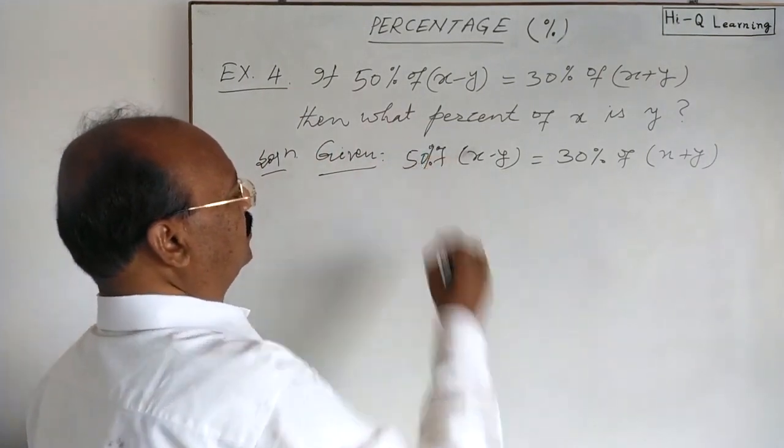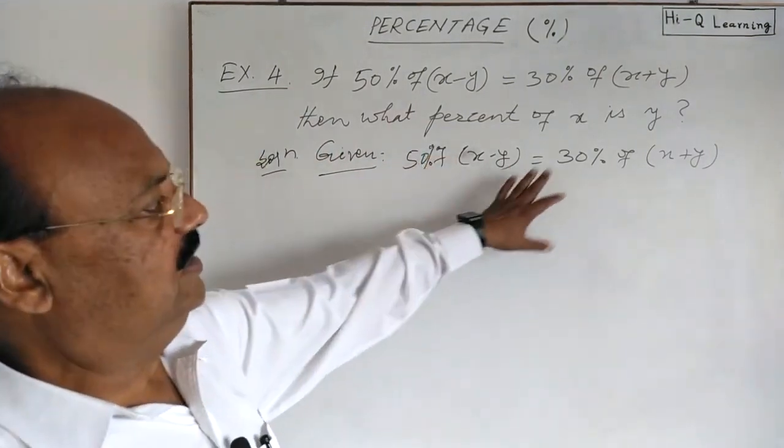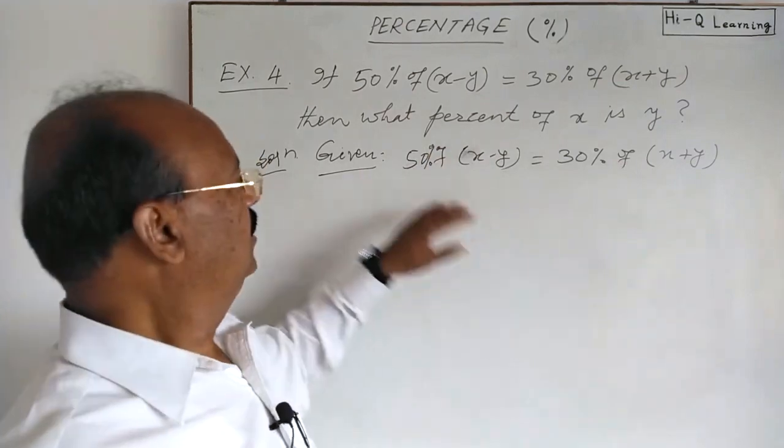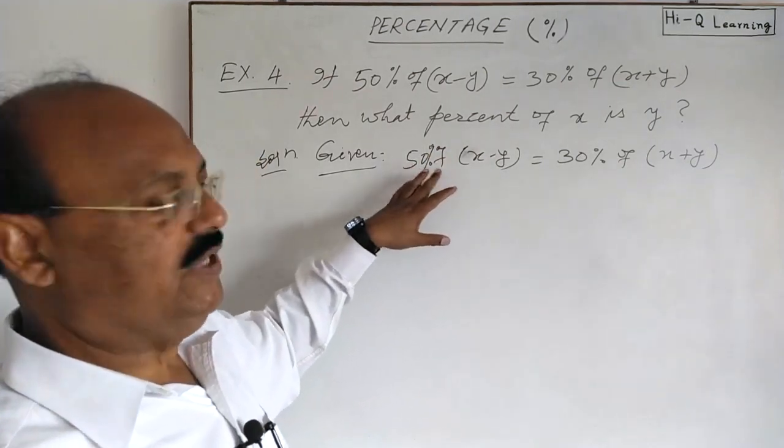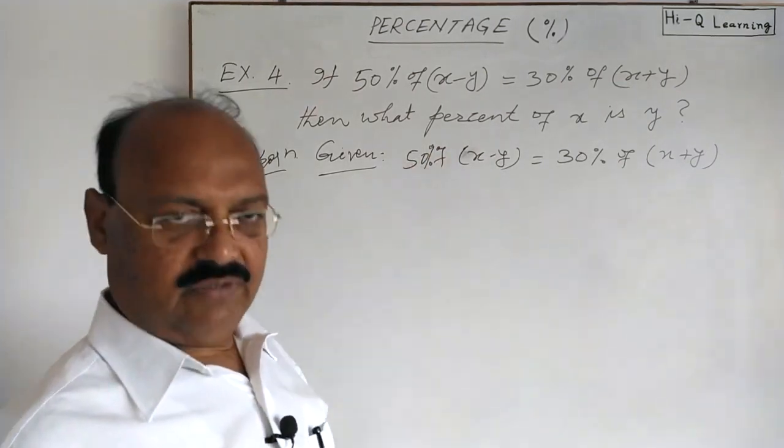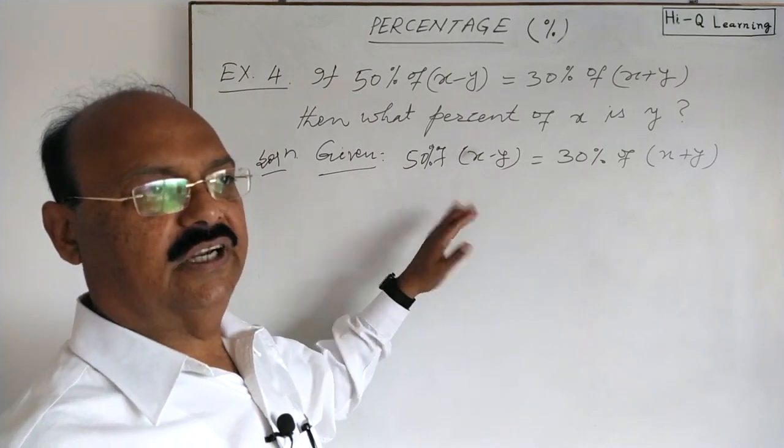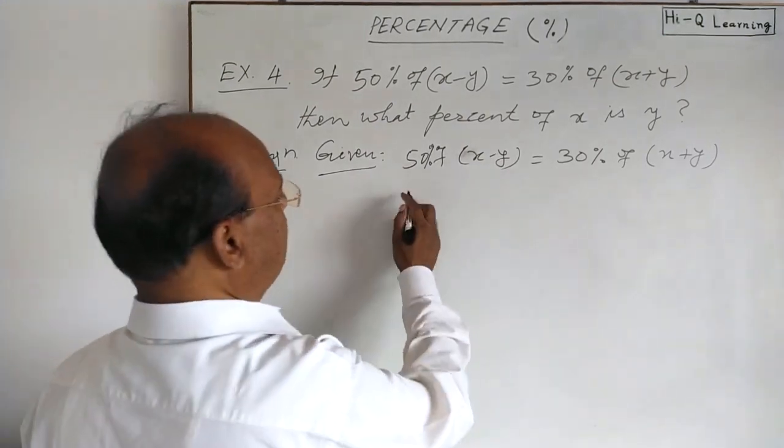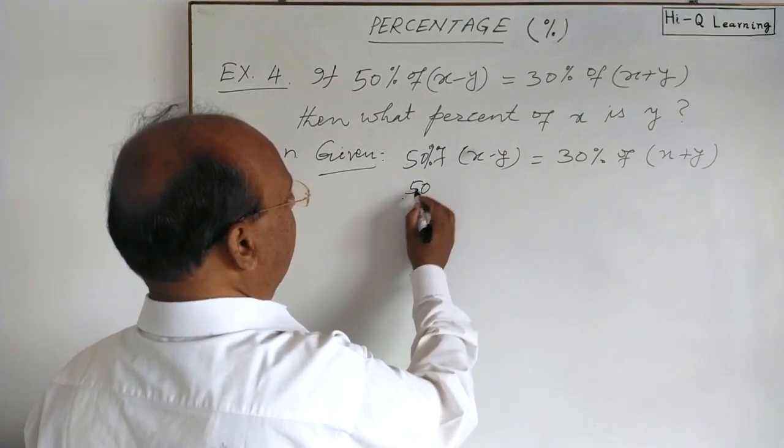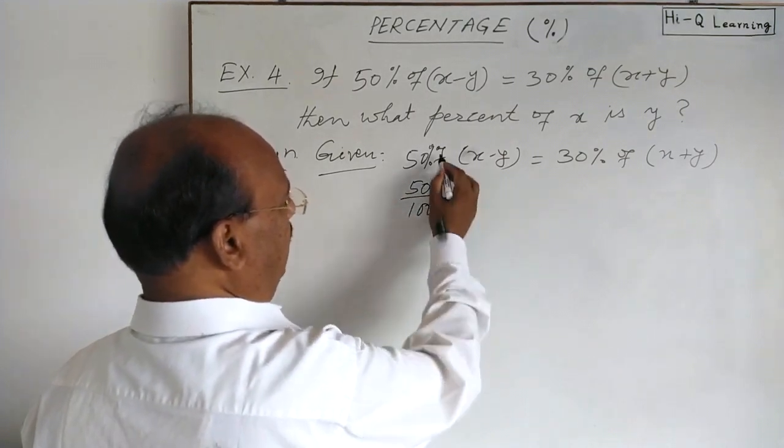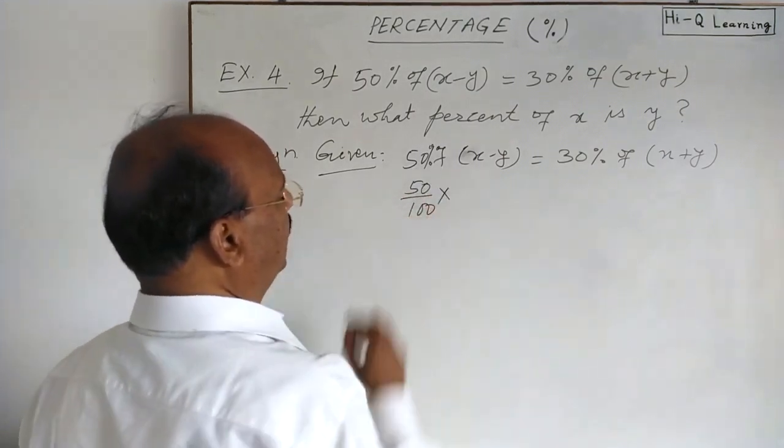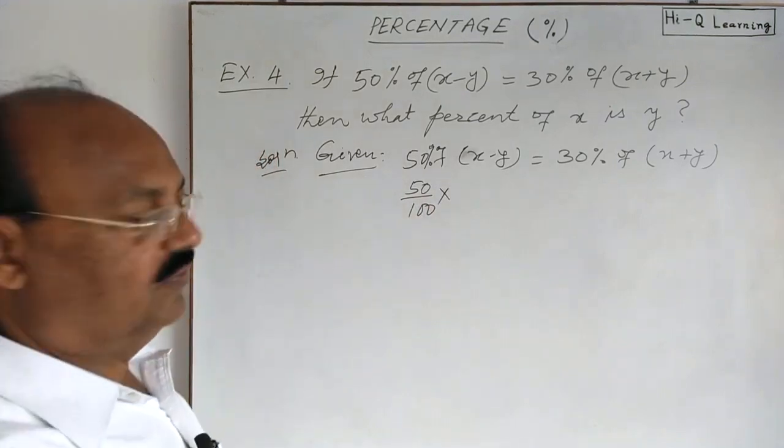50% of x minus y is equal to 30% of x plus y. So 50% means 100th part of 50. Percent means 100th part. So in place of 50%, we have to write 50 by 100. And in place of of, you have to write multiplication.